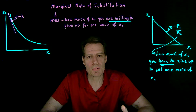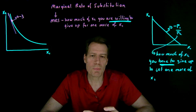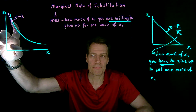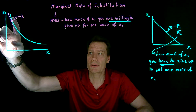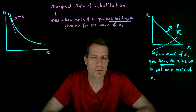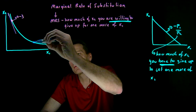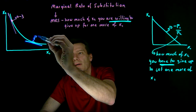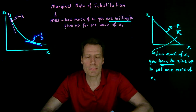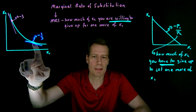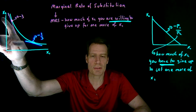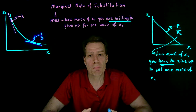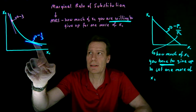It's called a marginal rate of substitution because it's how much we're willing to substitute one good for another on the margin, given where we're currently sitting. That marginal rate of substitution is going to change as we change the bundle on the indifference curve. If we go down here, for example, we have a much shallower slope — maybe the slope is only minus one third. That tells us when I'm sitting at this bundle, I'm only willing to give up a third of x2 to get one more of x1.